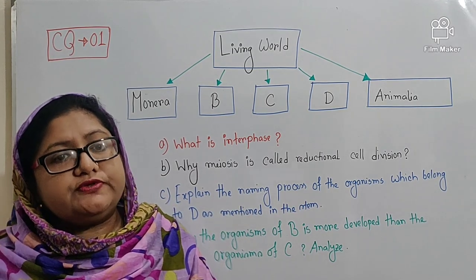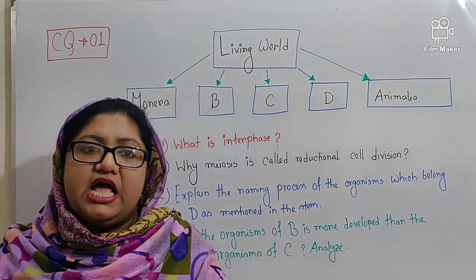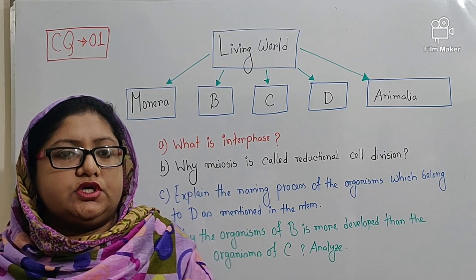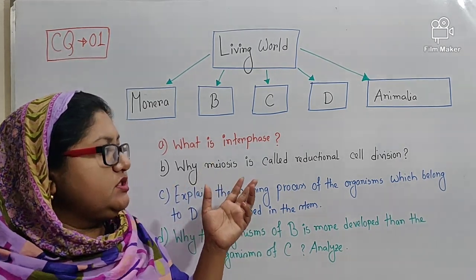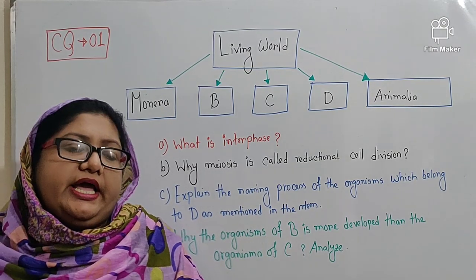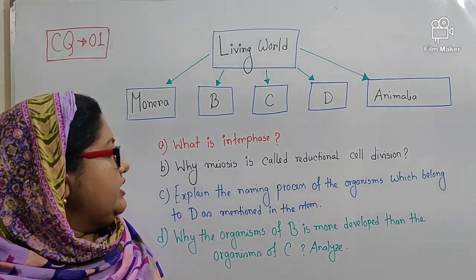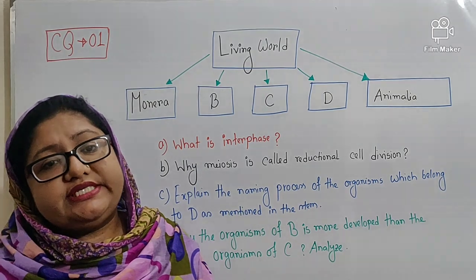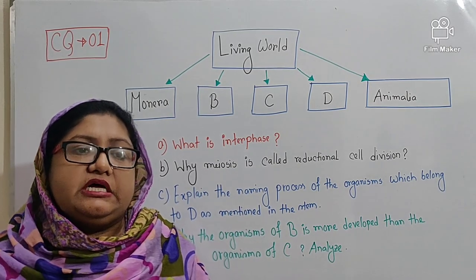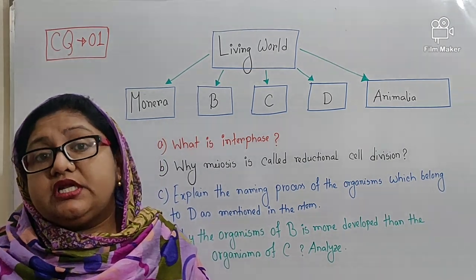The first paragraph: the process of cell division in which the nucleus of a mother cell divides twice, but the chromosome divides only once, and produces four daughter cells in which the number of chromosomes in the daughter cell remains or becomes half of that of the mother cell, is known as meiosis. Then, in the second paragraph you will write: hence, in meiosis, the number of chromosomes becomes half in the daughter cell than that of the mother cell. That is why it is known as reductional division.